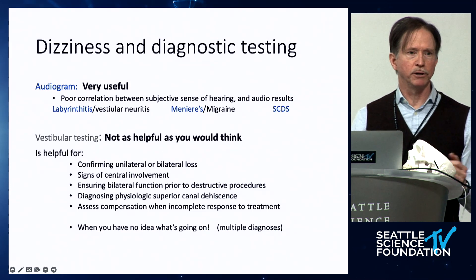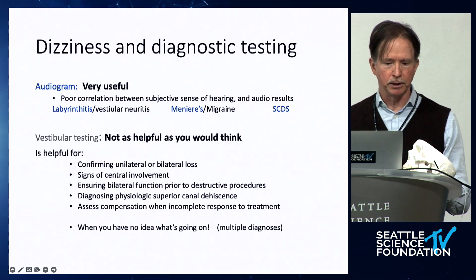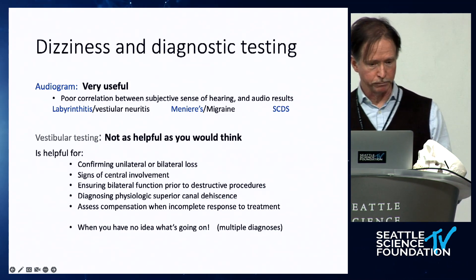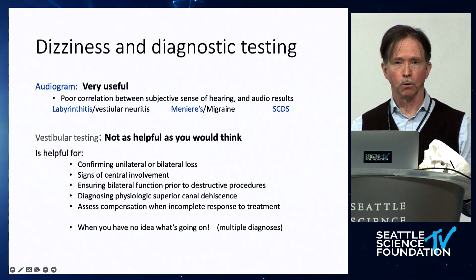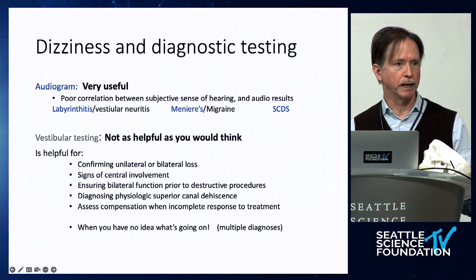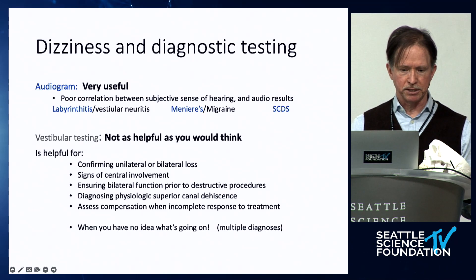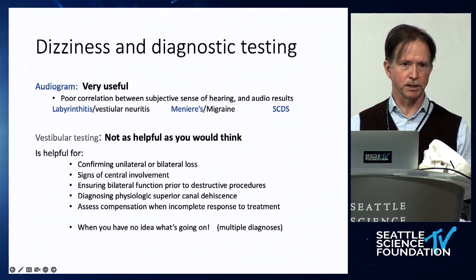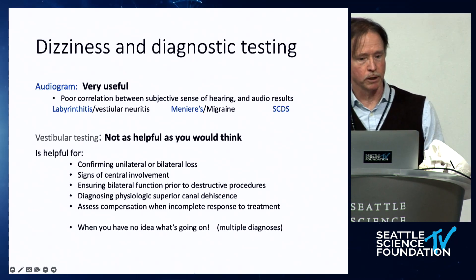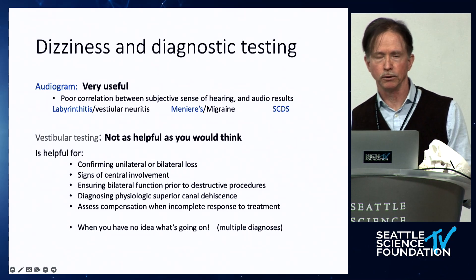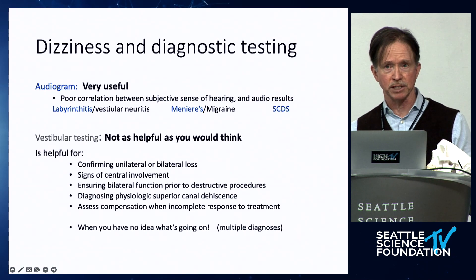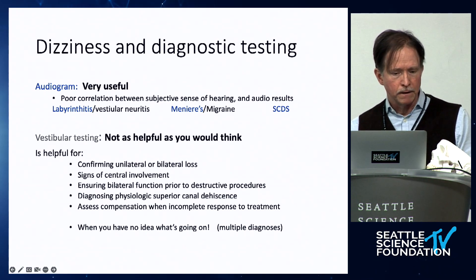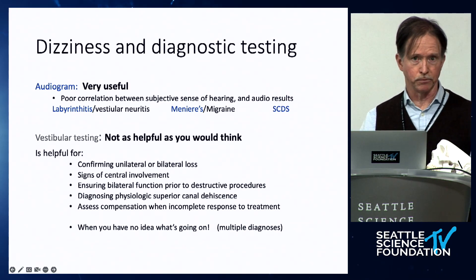For diagnostic testing: an audiogram is very useful — it can help distinguish labyrinthitis from vestibular neuritis, Meniere's from migraine, and identify characteristic findings for superior canal dehiscence syndrome. Vestibular testing, while I'm a big fan of it, is not always as helpful as we'd like. It is helpful for confirming unilateral or bilateral vestibular hypofunction, detecting subtle central signs that may explain poor compensation, and ensuring bilateral function before a destructive procedure — you don't want to render a patient a 'vestibular cripple' by operating on their only functioning ear.